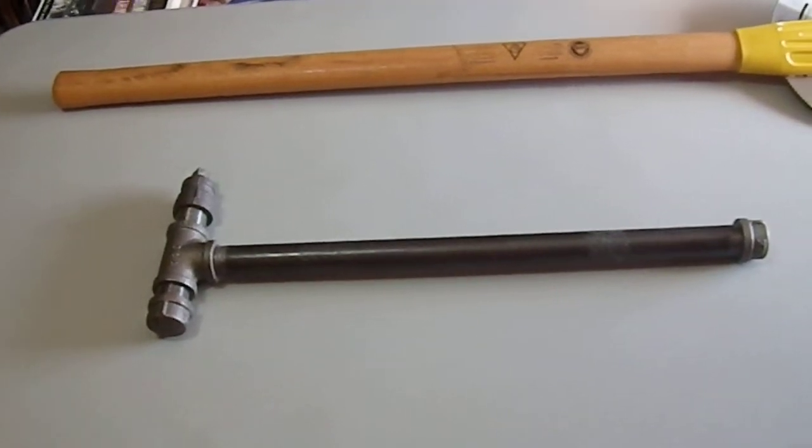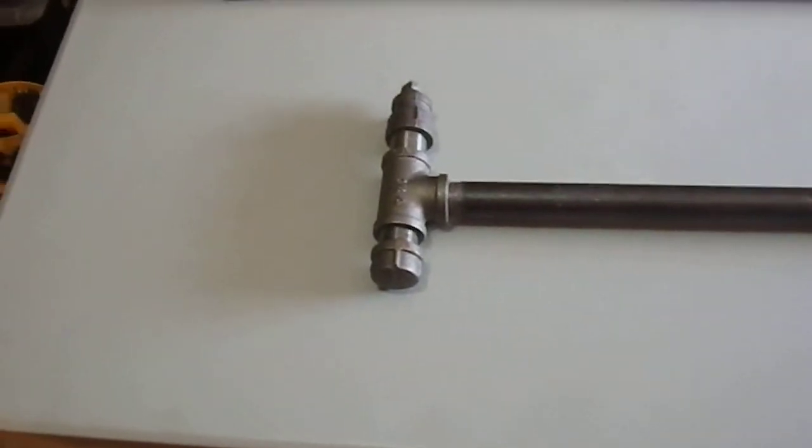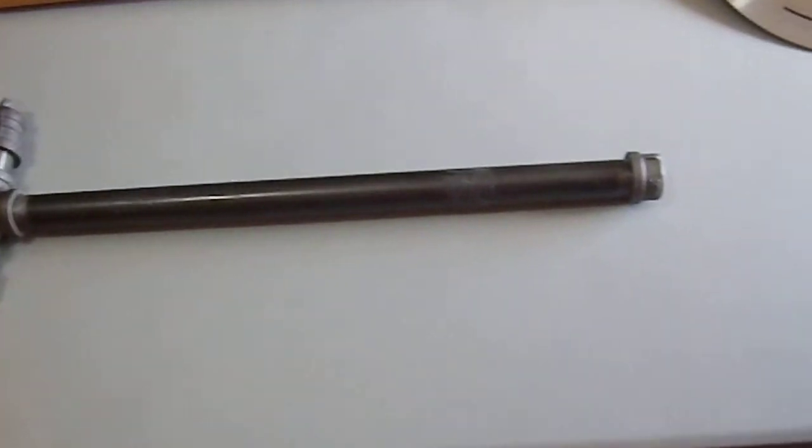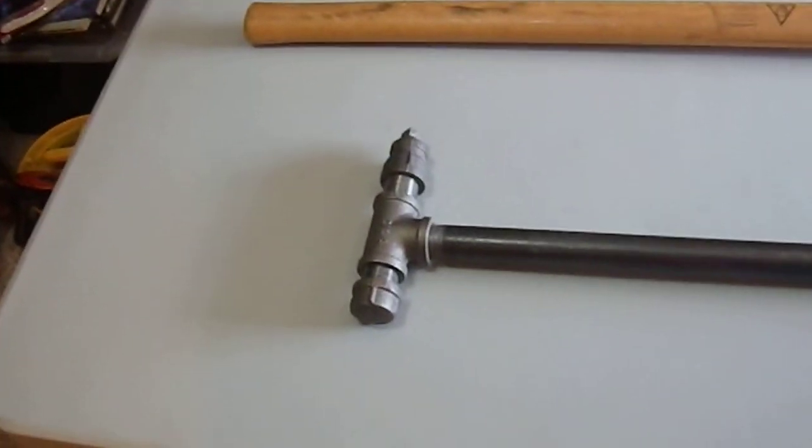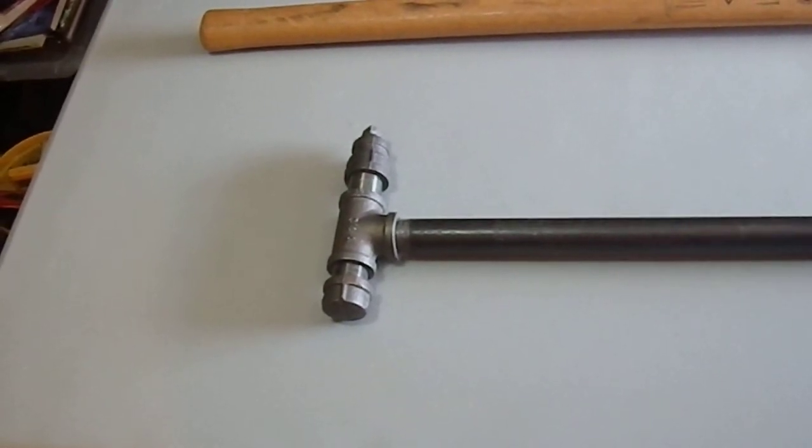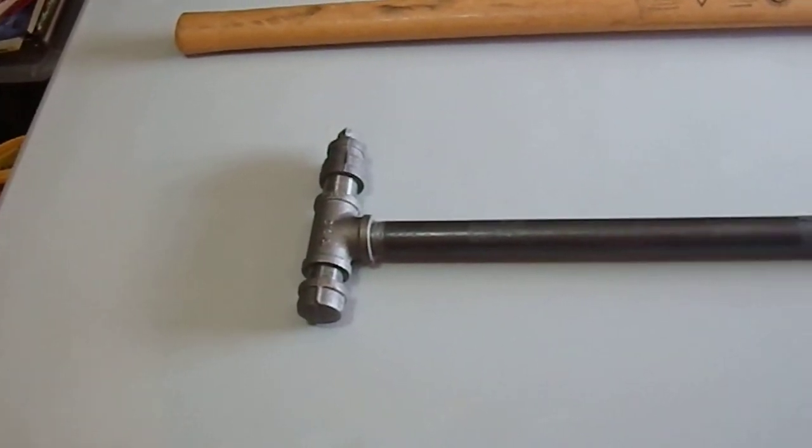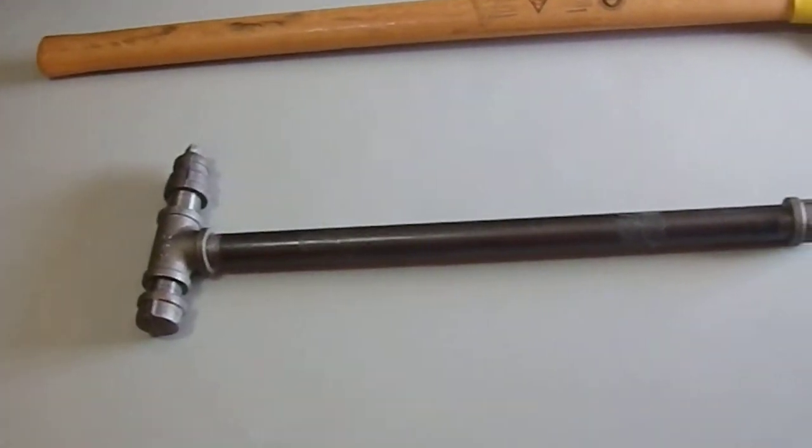I thought I'd talk about the first true homemade weapon I made, which is this black pipe warhammer, and then the latest weapon I have produced. Though some might consider the buckler, the one-handed diamond shield I made today, as also being a weapon because it does have big nasty spikes on it.